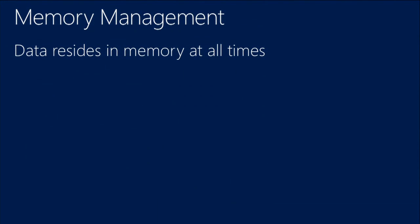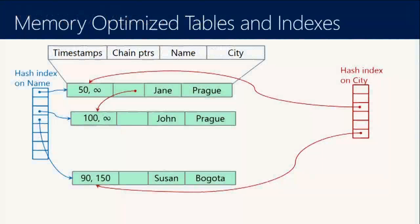This covers how tables use memory. As your workload is running, it is updating, deleting, and inserting rows. There will always be some stale rows. Because we have multi-versioning, you need to take into account that you have enough memory to cover these stale rows.